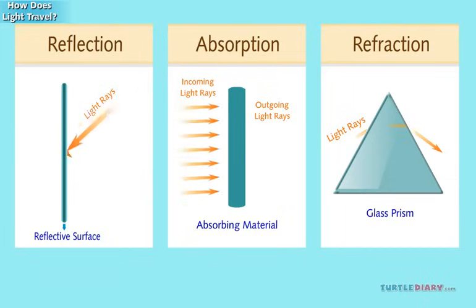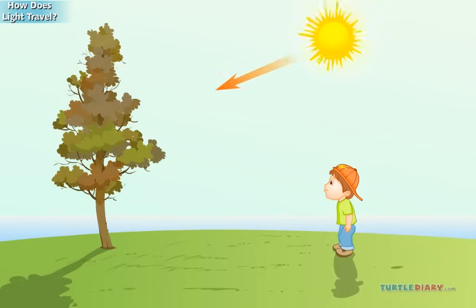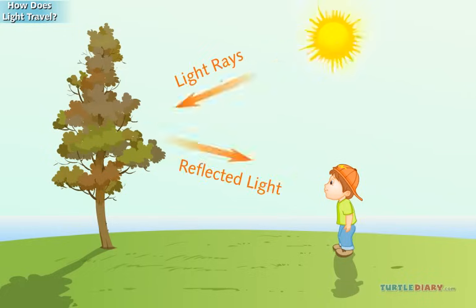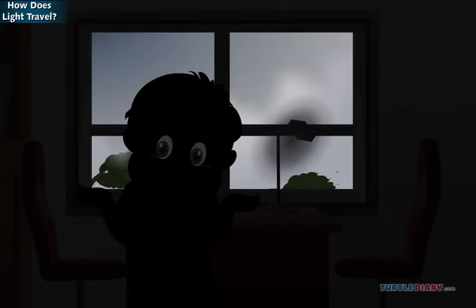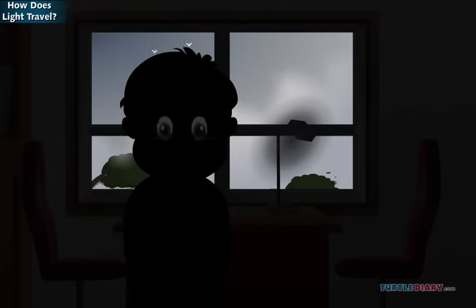Let us learn these terms in detail. When light hits something and bounces off of it, we say it reflects. Reflected light is what helps us to see. We see objects only when light reflects off them. When it is dark and no light is reflecting, we cannot see anything.